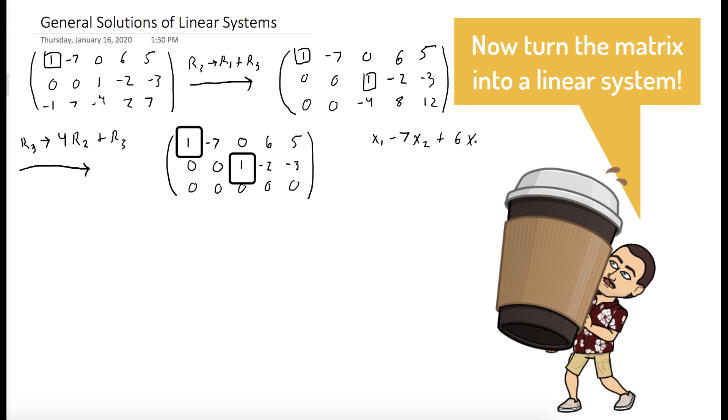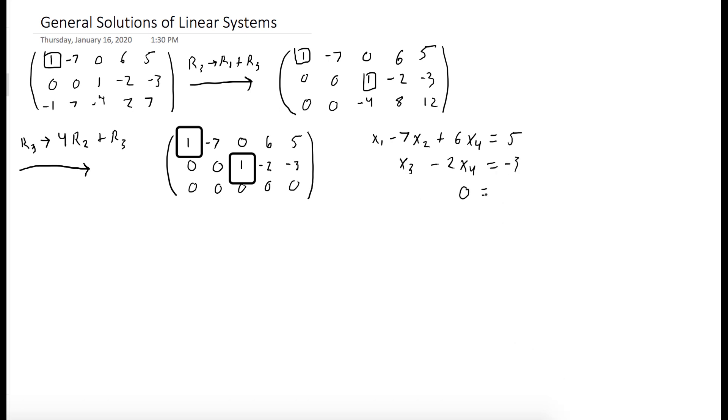That's x1 minus 7x2 plus 6x4 equals 5. And x3 minus 2x4 equals negative 3. And the last equation, of course, is zero equals zero.